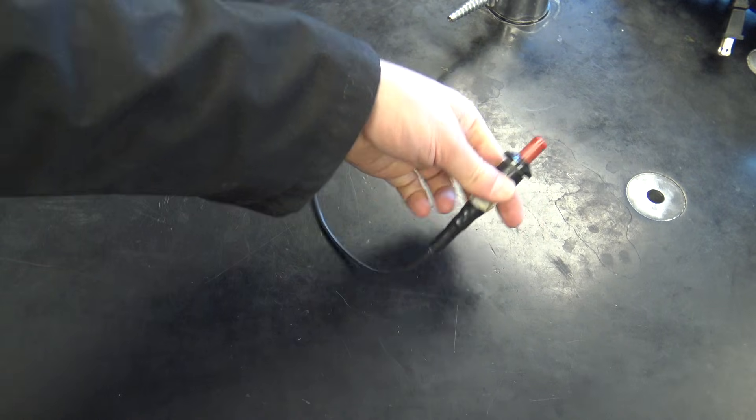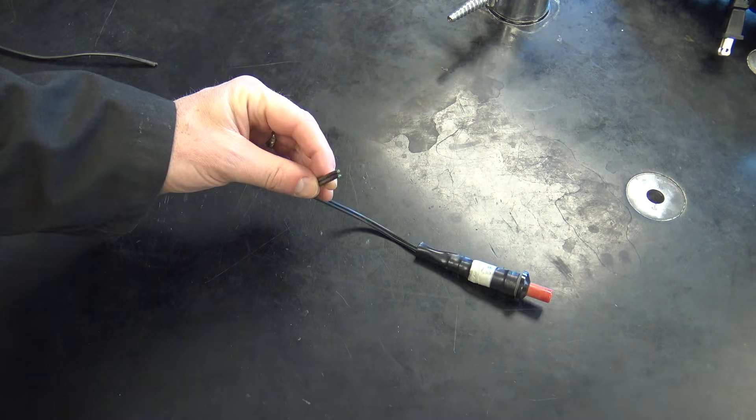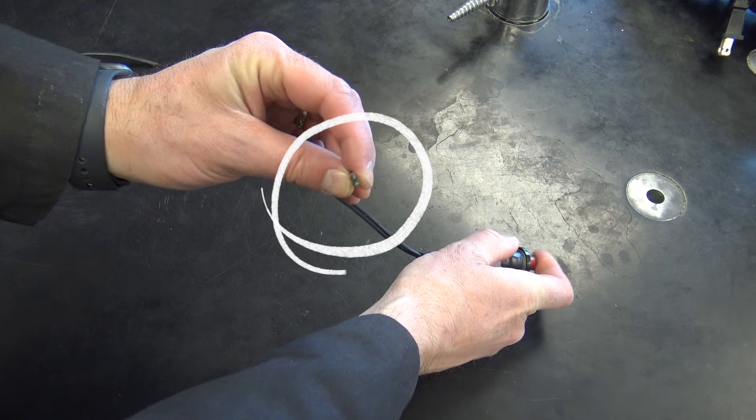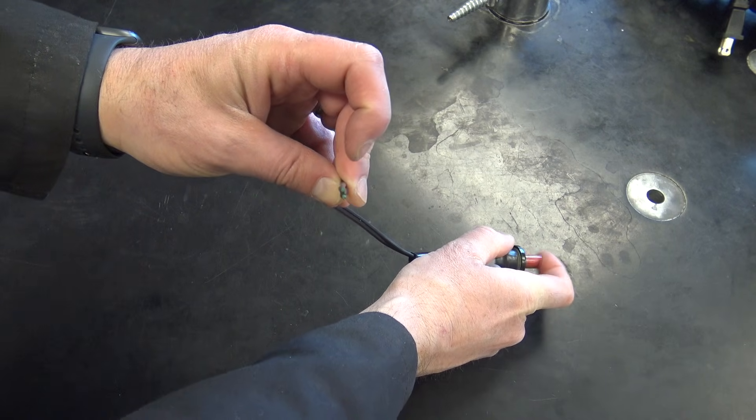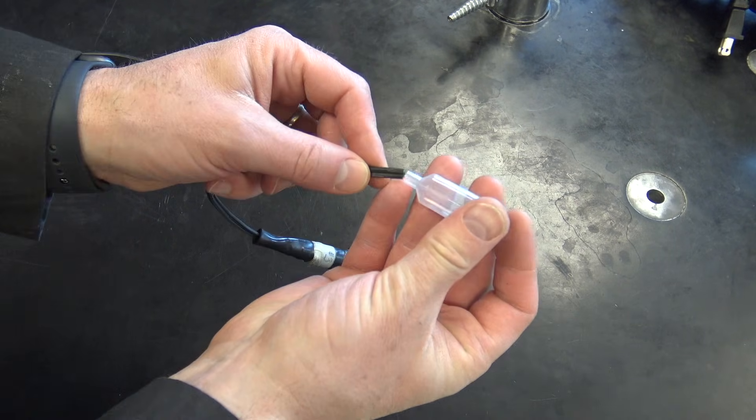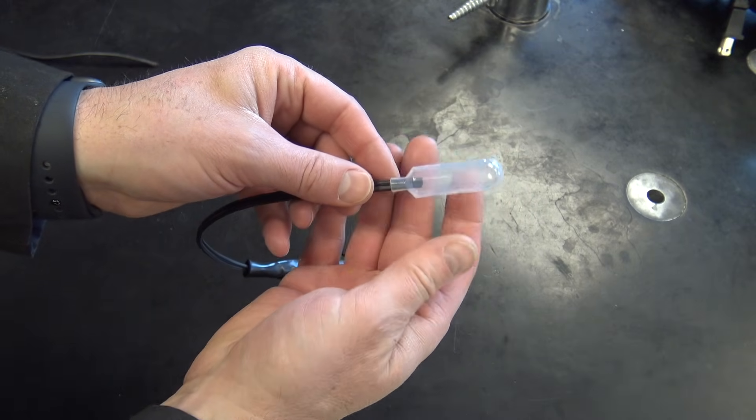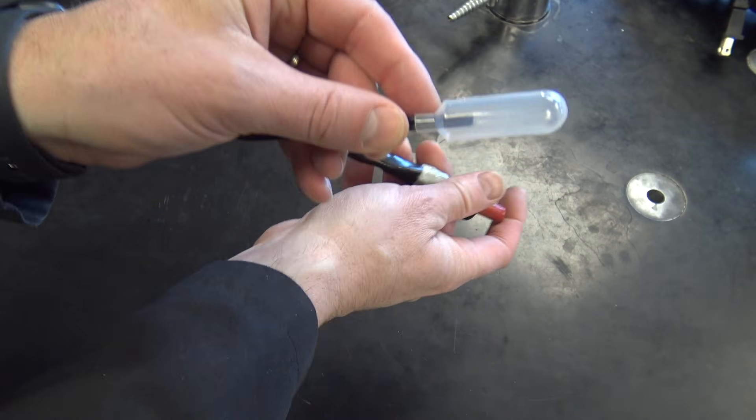but we're going to use this. This is just a barbecue lighter that we've modified so that we can get a spark. Now watch. See the spark on the end right here? Perfect. This has got to slide on here, so you have to have the right size pipette to be able to get a spark in there.